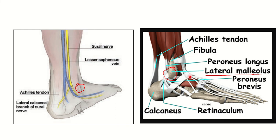In the second picture, we can see two tendons — one is the peroneus longus tendon and the other is the peroneus brevis. So peroneus longus and peroneus brevis, these two important muscles, pass behind the lateral malleolus.